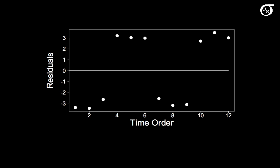If we've recorded our observations in time order of some nature, then we should also plot that against time order. Here there is something going on. Our residuals are small, and then they're big, and then they're small, and then they're big.